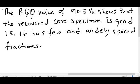So the RQD value of 90.5% shows that the recovered core specimen is good. That is, it has few and well-spaced fractures.